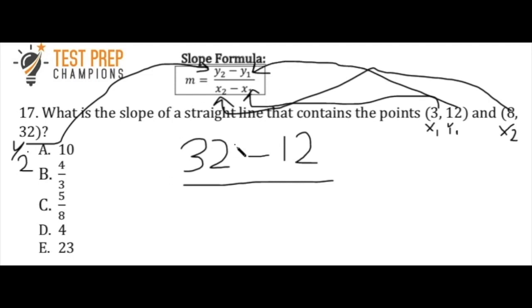Which is why I have 32 minus 12, and my x2 is 8, and my x1 is 3. So if we do some math here, what is 8 minus 3? 8 minus 3 is 5, and what is 32 minus 12 is 20.